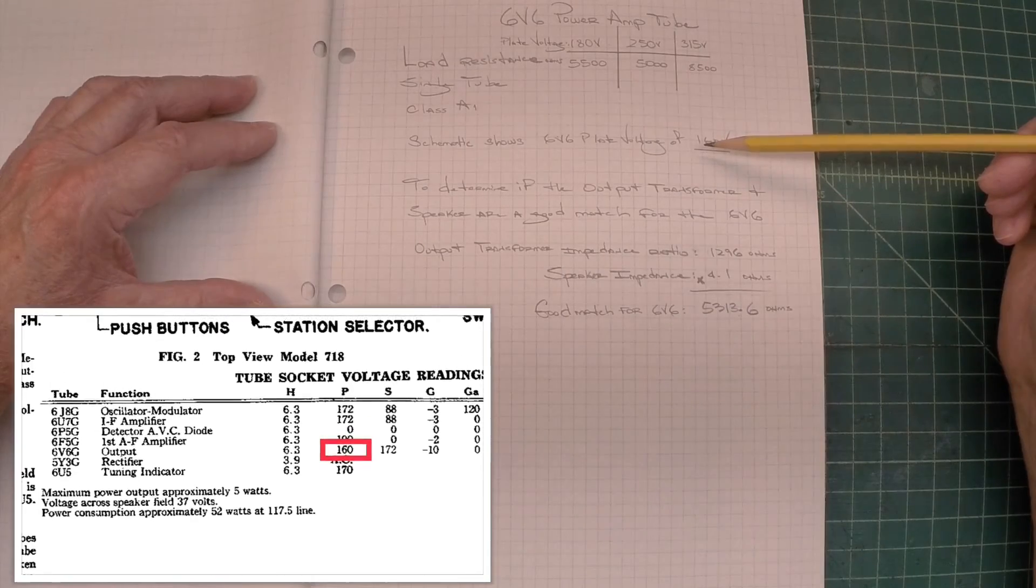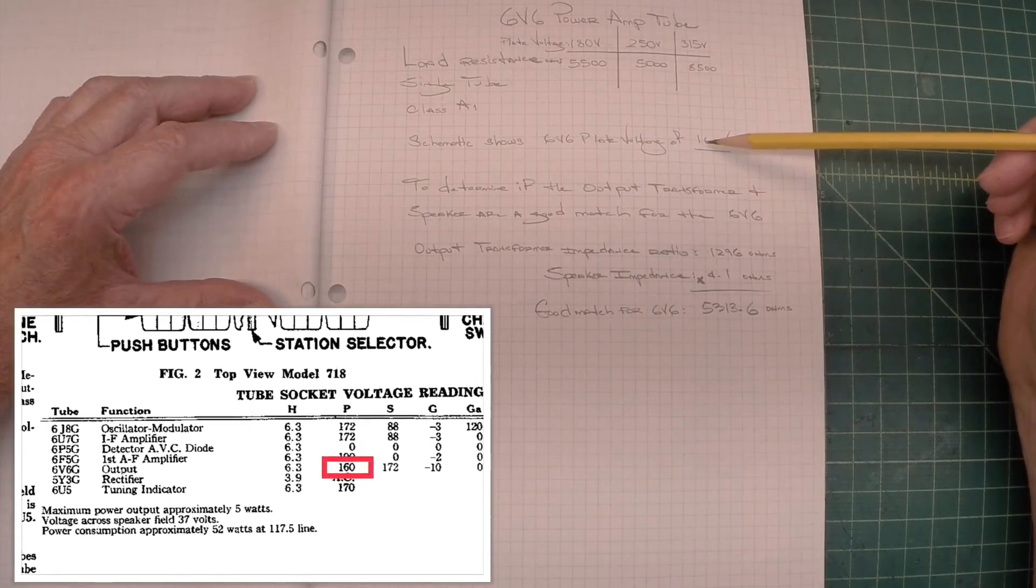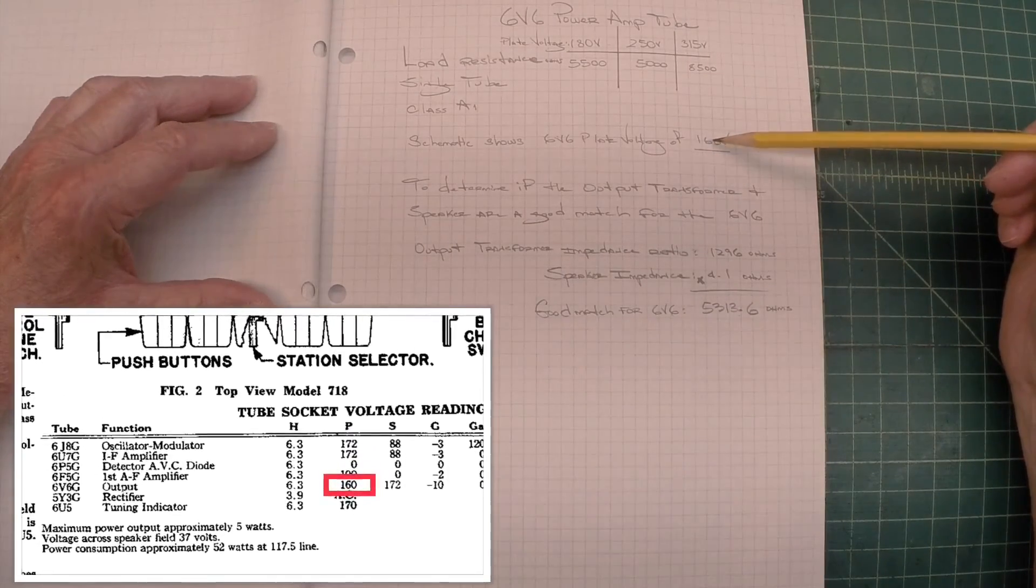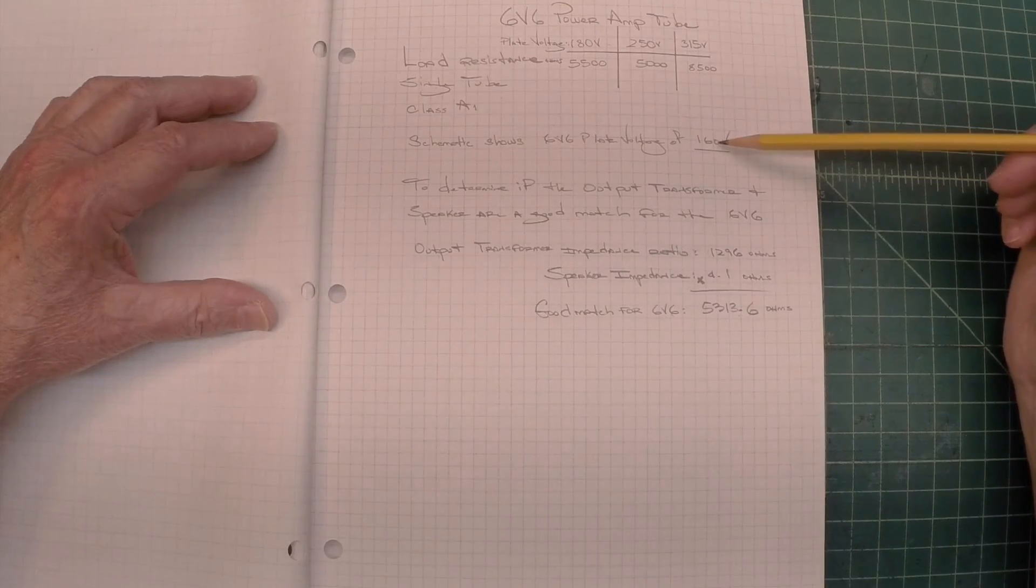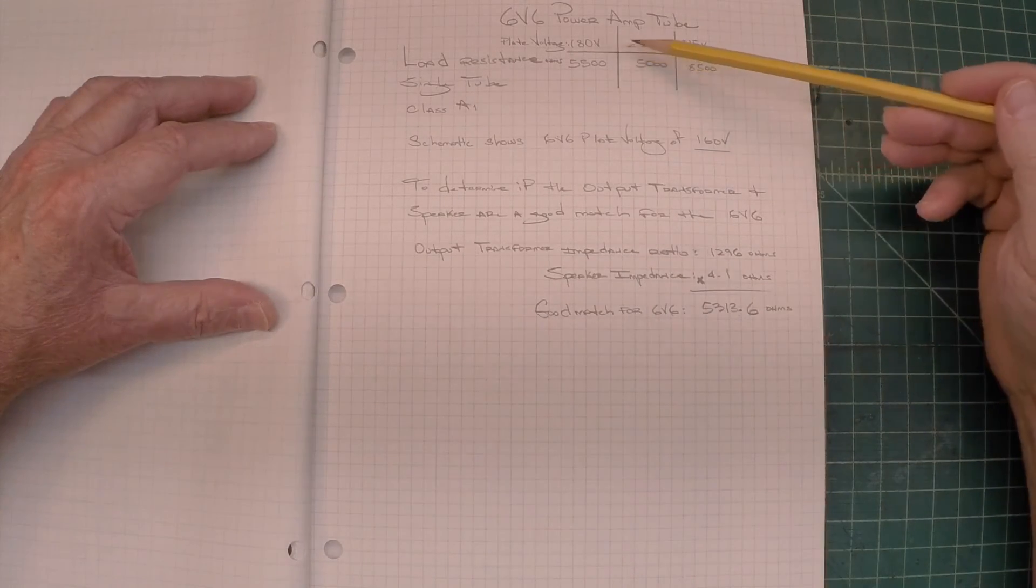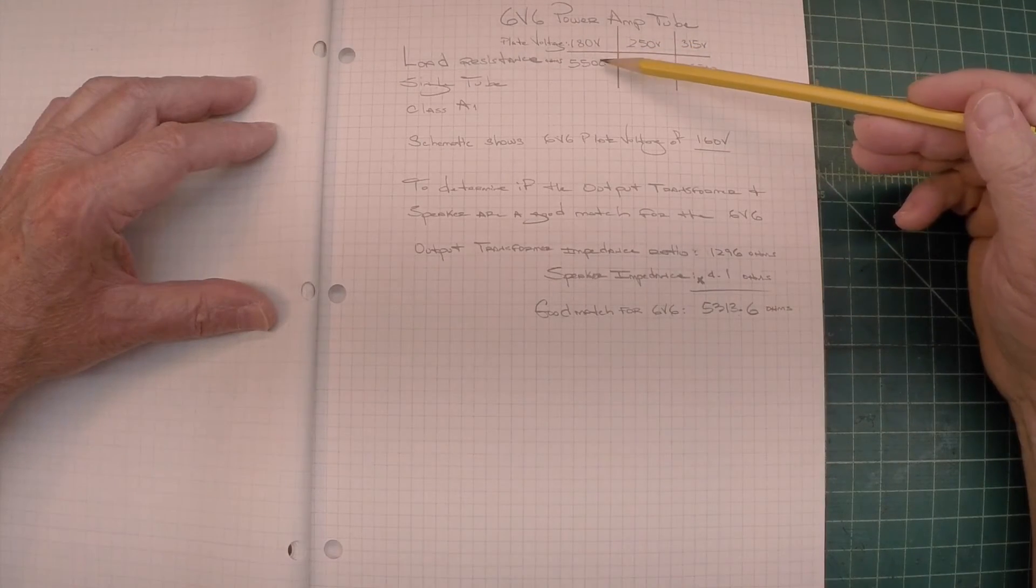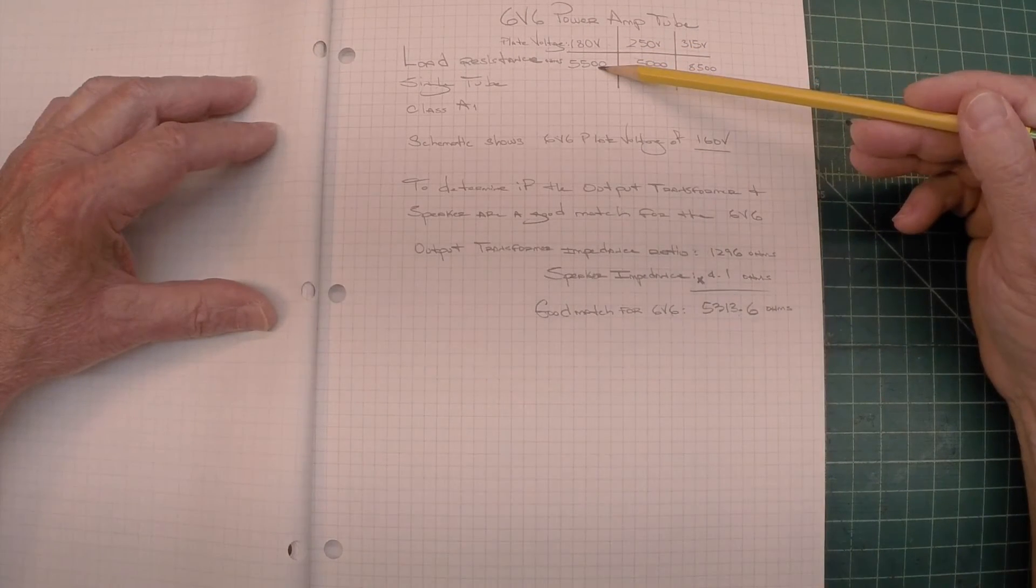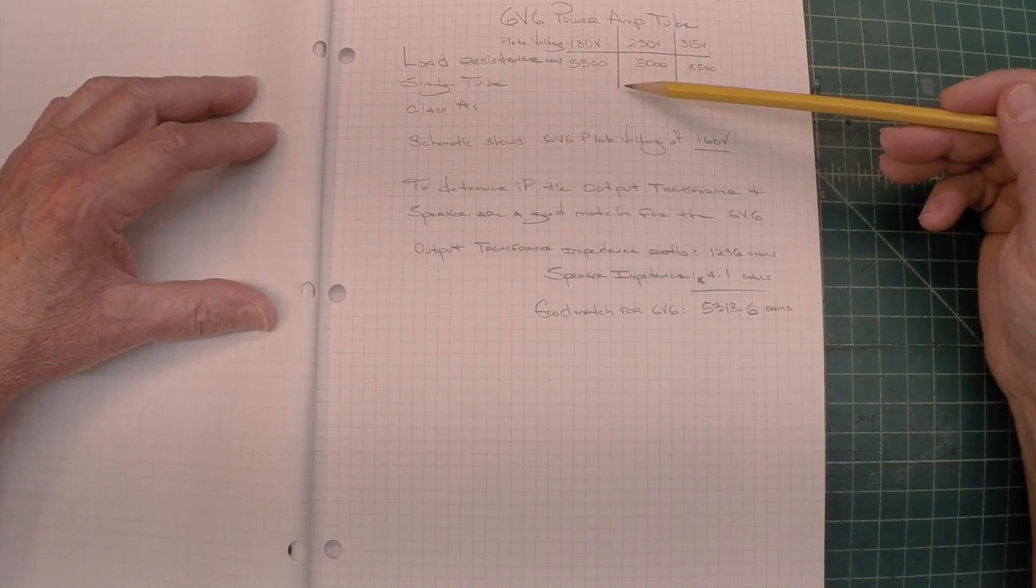We know modern day voltages and a higher impedance voltmeter is going to read higher than that, so we'll probably be close to 180 if not higher on the plate of the 6V6 once the restoration is complete.